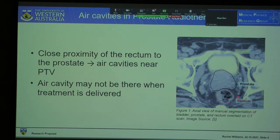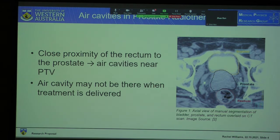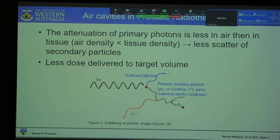The close proximity of the rectum to the prostate means that air cavities may be present when a patient is CT'd for treatment planning. These air cavities may not necessarily be present when the treatment is delivered, especially because the treatment will be delivered in multiple fractions. The attenuation of primary photons through air is less than in tissue due to its lower density, which results in less scattering of secondary particles and less dose delivered to the target volume.